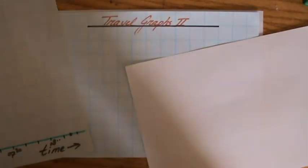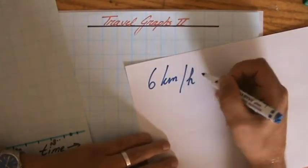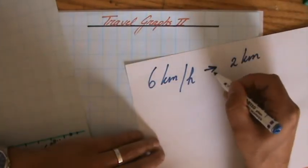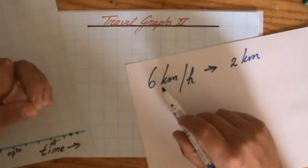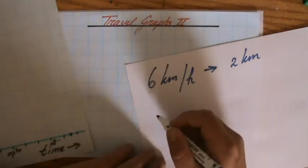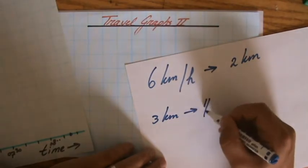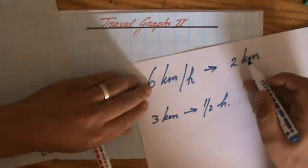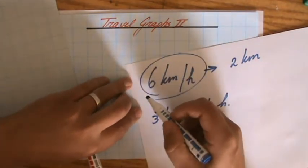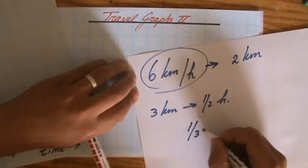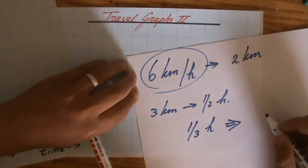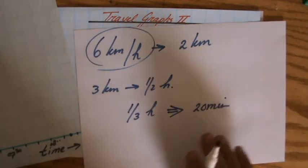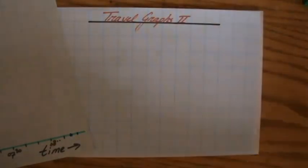She's walking at six kilometers per hour and covers two kilometers. That's going to take less than an hour — at that speed she does three kilometers in half an hour. Two kilometers is a third of six kilometers, so it takes a third of an hour, which is 20 minutes.